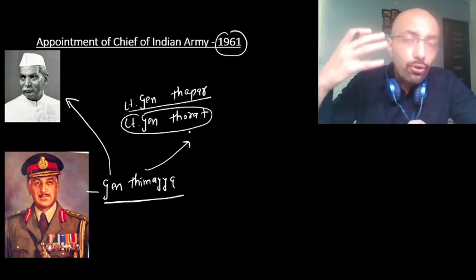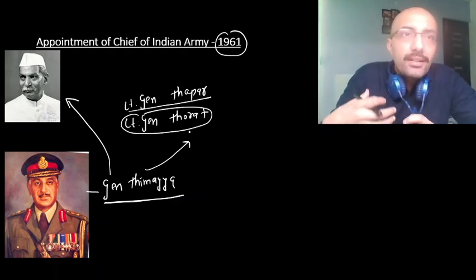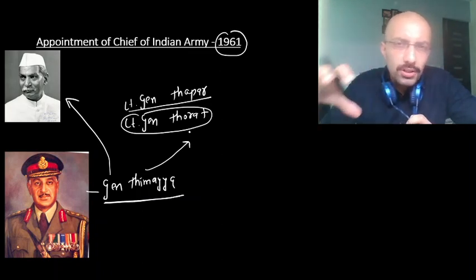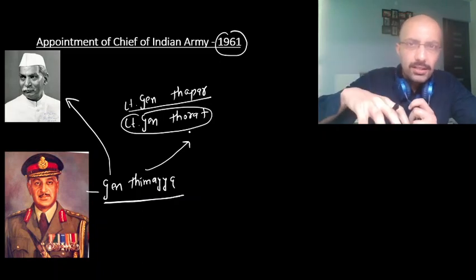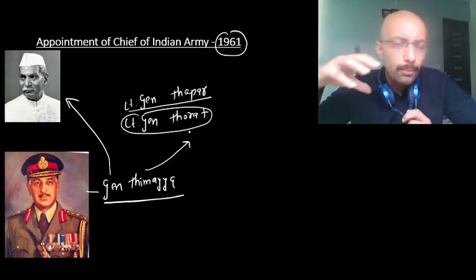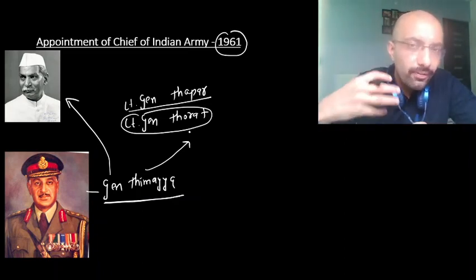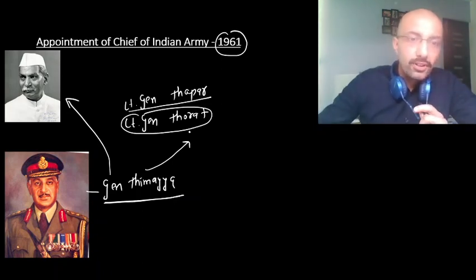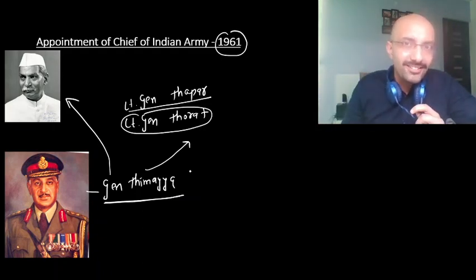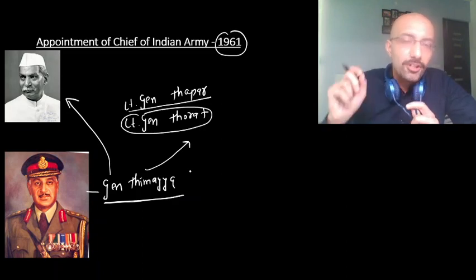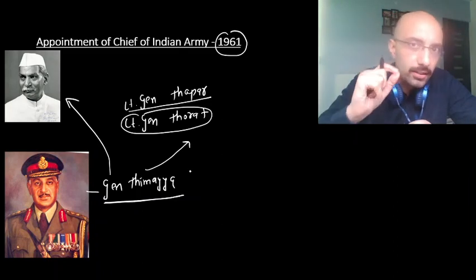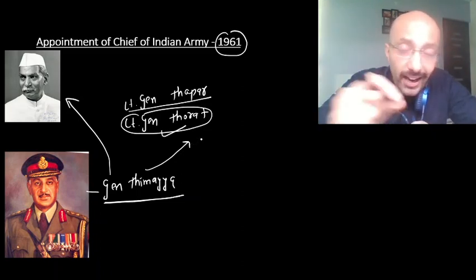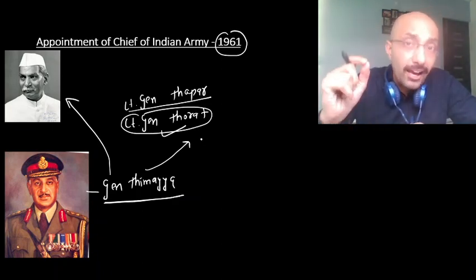Rajendra Prasad insisted that because he is the President and Supreme Commander of the Defence Forces, he would appoint the next Army Chief — Mr. Thorat. Pandit Nehru again had to convince Rajendra Prasad and remind him that, like the British monarch, he is only a symbolic, nominal head. In fact, this issue of Presidential powers over the armed forces was precisely what Rajendra Prasad had asked about in his very first paper written just two months after becoming President.